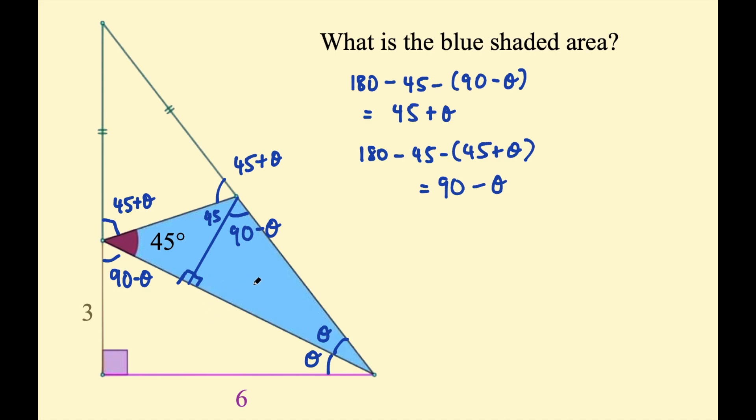Now these two right triangles are similar, and I'm going to go ahead and find the hypotenuse now. Using Pythagoras's theorem, a squared plus b squared equals c squared. c squared is going to be 3 squared plus 6 squared, 36 plus 9 is 45. So c is equal to the square root of 45, or the square root of 9 times the square root of 5, or 3 root 5. That's the length of that hypotenuse.